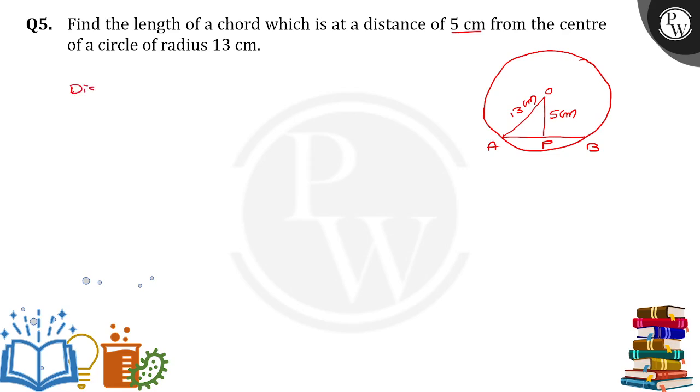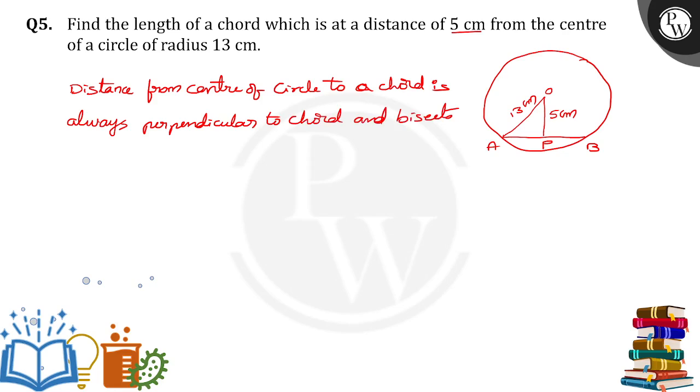See here, distance from center of circle to a chord is always perpendicular to the chord, always perpendicular to chord and bisects the chord. Okay, and bisects the chord.